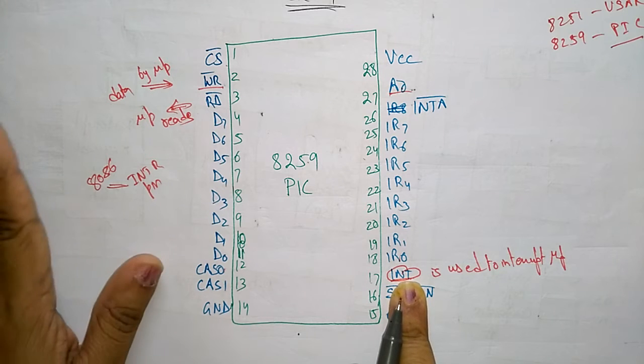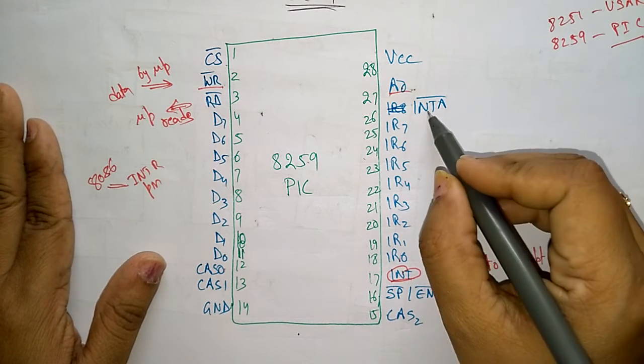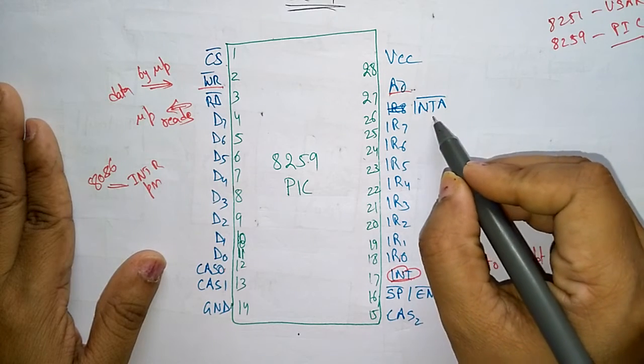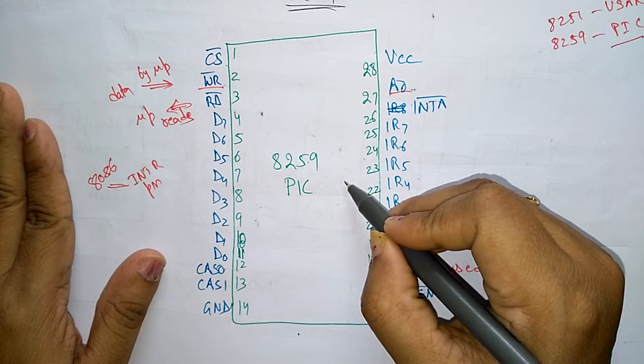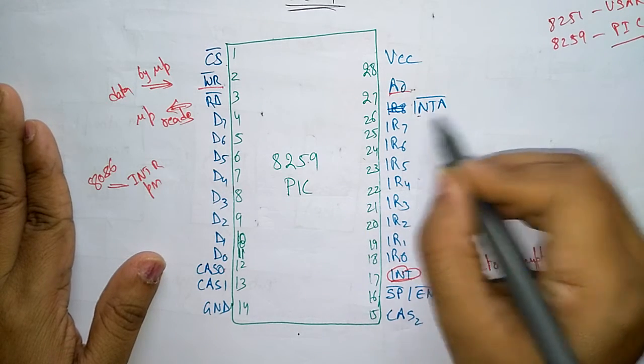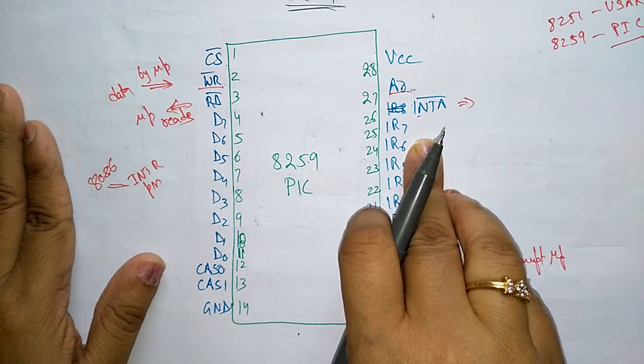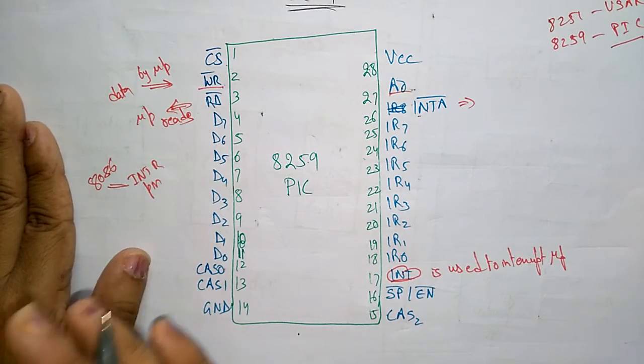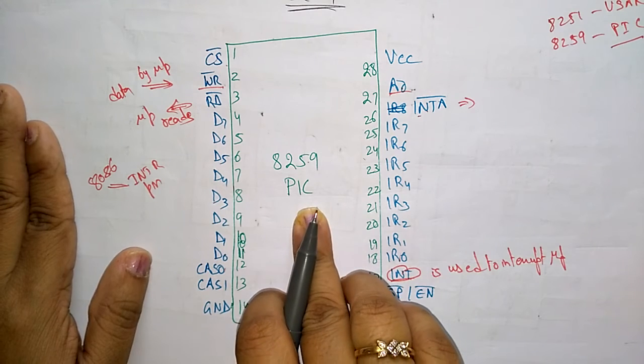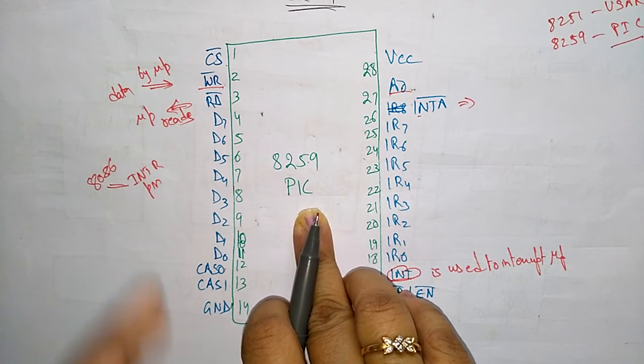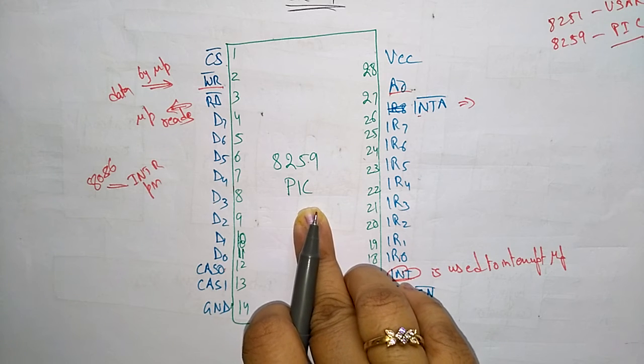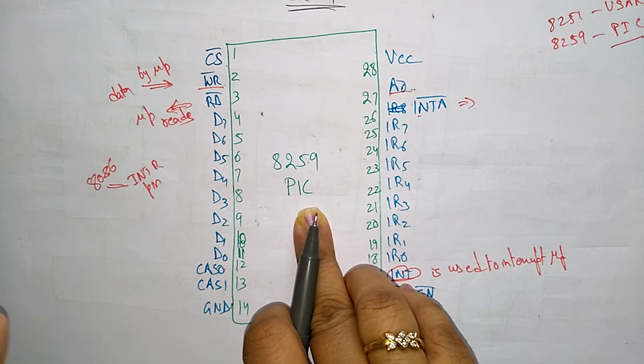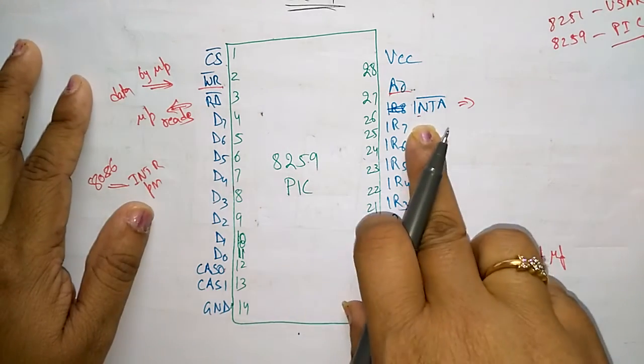INTA: it is a pulse issued by microprocessor to enable 8259 interrupt vector data onto the data bus. This INTA is sent by the microprocessor. The microprocessor, after completion of the work, acknowledges to the 8259 to put the data onto the data bus. The processor is asking 8259 in the form of acknowledgment.